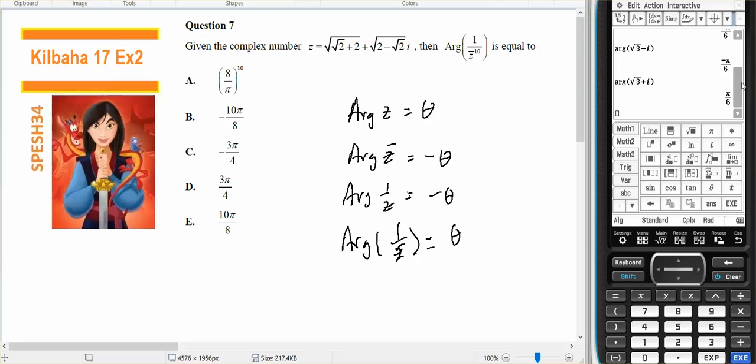I can demonstrate that: if z was root 3 plus i, its argument is pi over 6. If I did root 3 minus i, it's negative pi over 6. If I do 1 over root 3 plus i, it's negative pi over 6. Therefore, if I have 1 over the conjugate, we should get back to pi over 6 again, which is what I do.